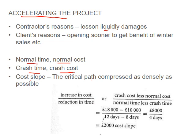You can calculate your cost slope by taking your increase in cost over your reduction in time — that is, crash cost less normal cost gives you the increased cost, and normal time less crash time gives you the reduction in time.